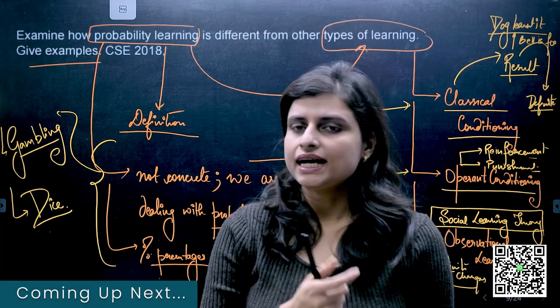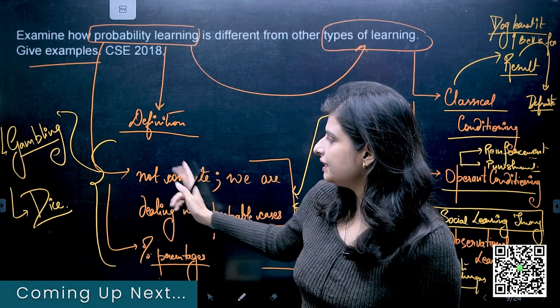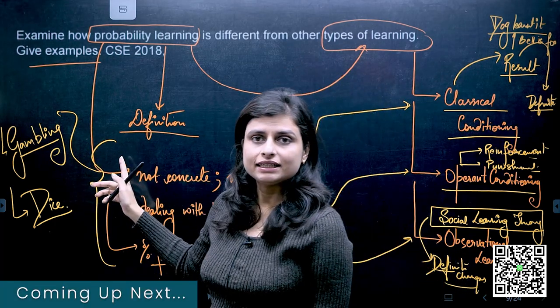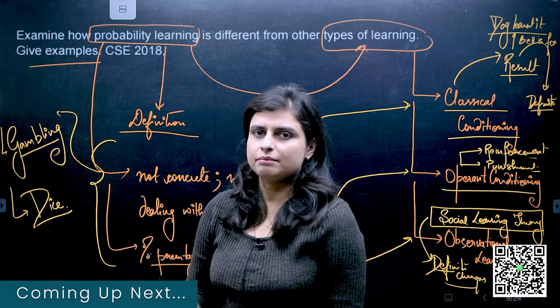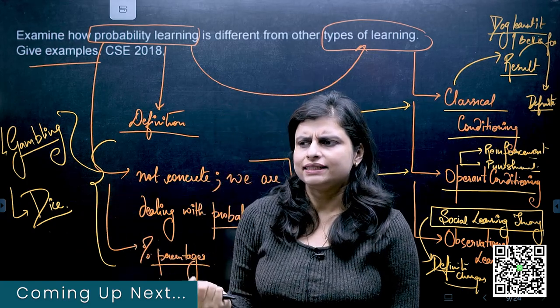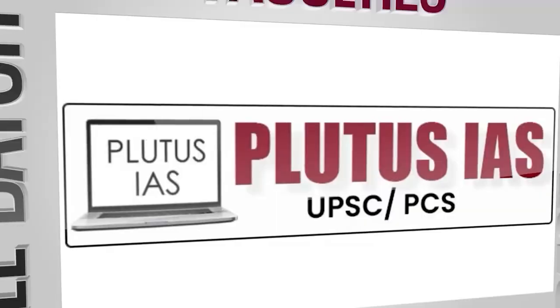If there's a case of gambling, what is happening in gambling? That means we are dealing with a probable case. A probable case means, for example, the person might through calculation find certain outcomes.